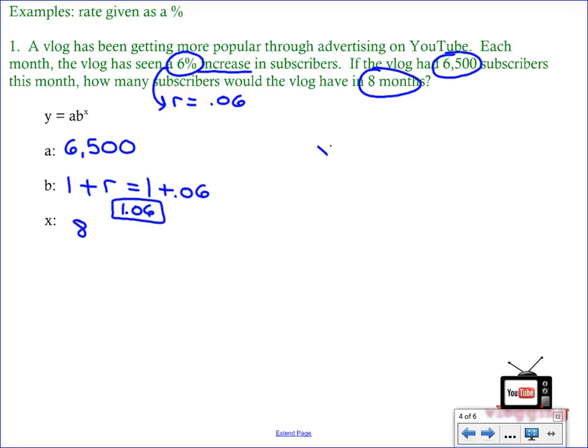What we do next is we take all of these values and we write the equation. So we have y equals a b to the x. We're going to have y equals, in place of a is 6,500, and then your b value, we always want you to put in parentheses, so in this case we've calculated our b value to be 1.06, and then you put the 8 in as your exponent.